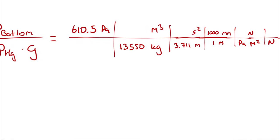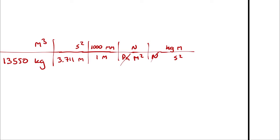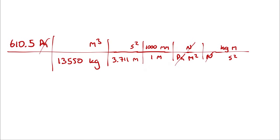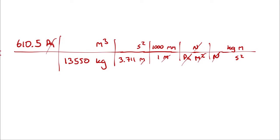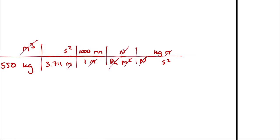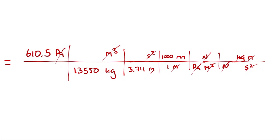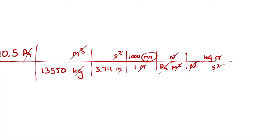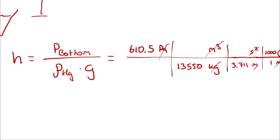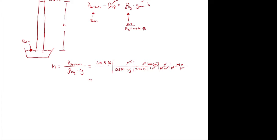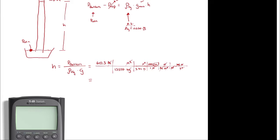And a newton is a kilogram meter per second squared. So pascal cancels pascal, newton cancels newton. Meters, meters, meters squared cancels cubic meters and meters. Second squared cancels second squared, and kilograms cancels kilograms. That leaves me with just millimeters in the numerator. So if I pull up my calculator here, we should be able to coerce it into doing stuff for us. 610.5 multiplied by 1,000 divided by 13,550 times 3.711.